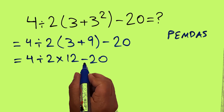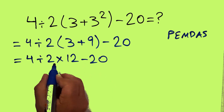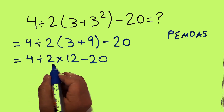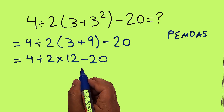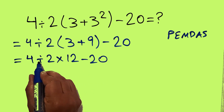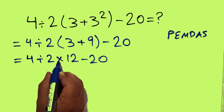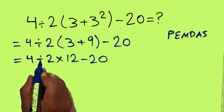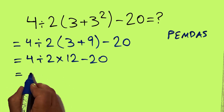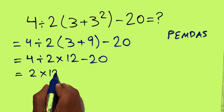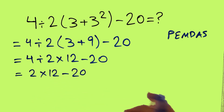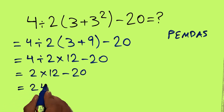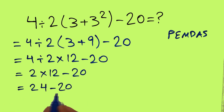As we know, multiplication and division have higher priority than addition and subtraction, so we first do multiplication or division. Remember that multiplication and division have equal priority, and we work from left to right. So first we do 4 divided by 2, and 4 divided by 2 equals 2. Then 2 times 12 equals 24. And 24 minus 20 gives us 4. Therefore, our final answer to this problem is 4.